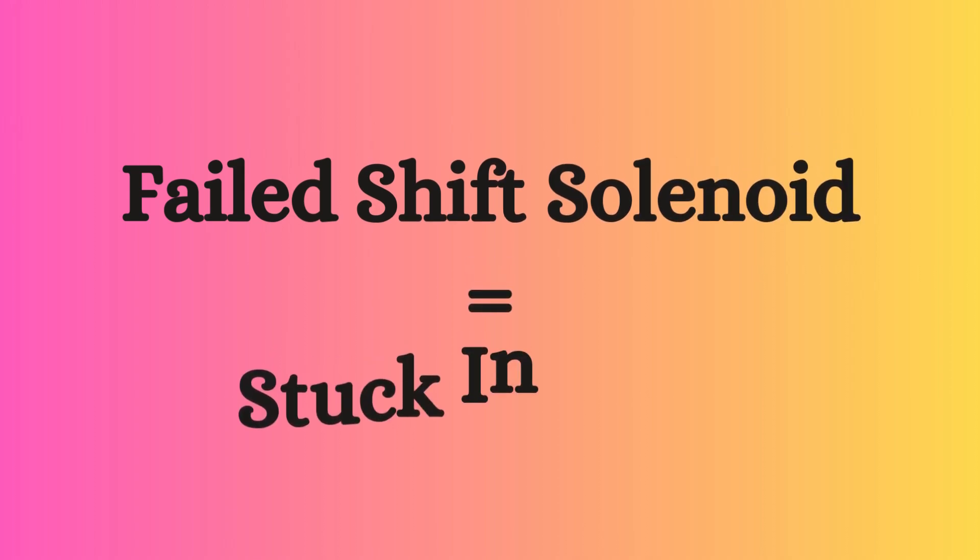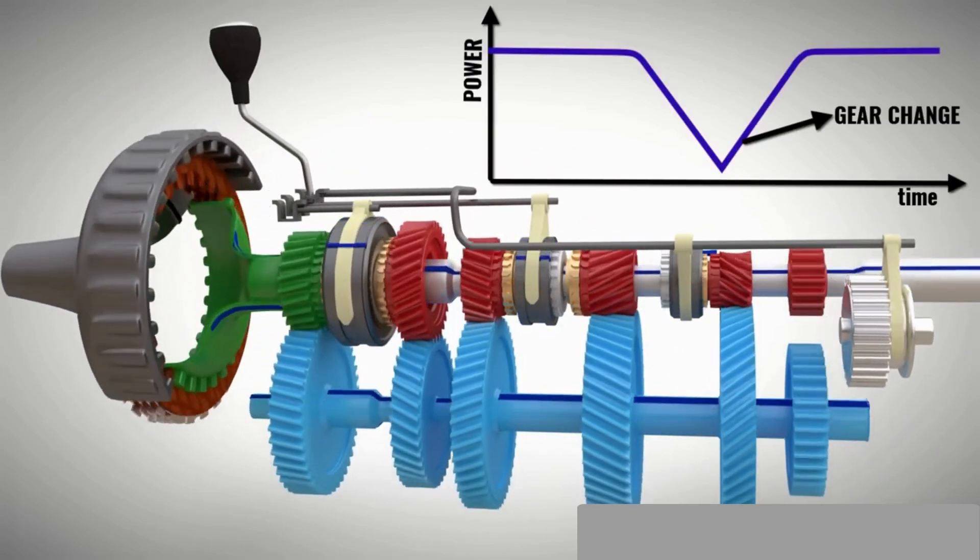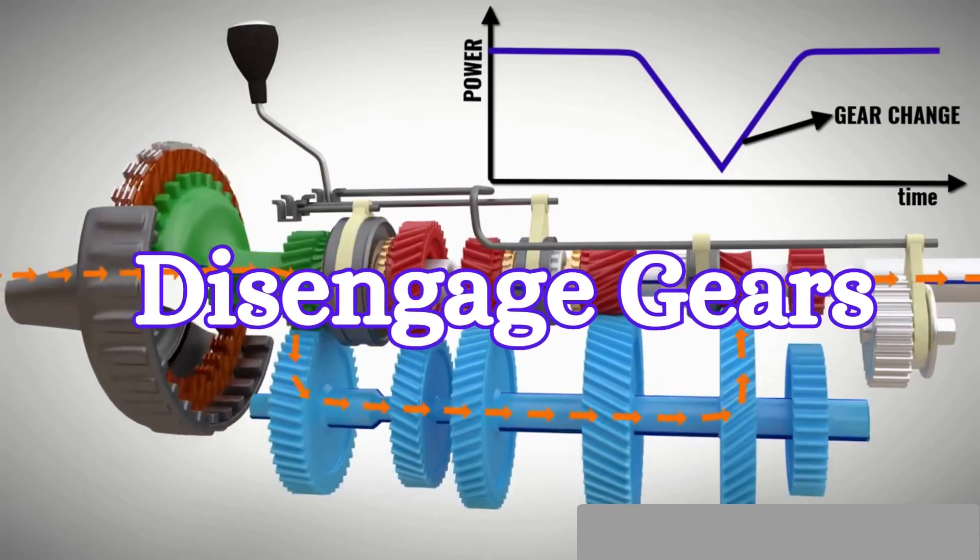Three, stuck in gear. If the shift solenoid fails, it may not be able to command the transmission to shift out of a specific gear. This happens because the solenoid is responsible for controlling the hydraulic pressure needed to engage or disengage gears.